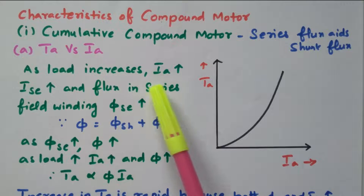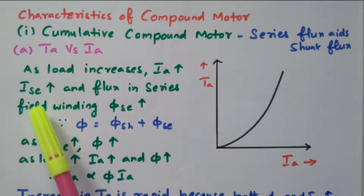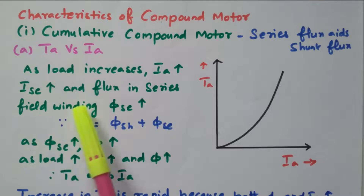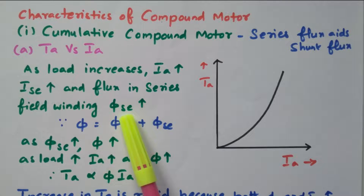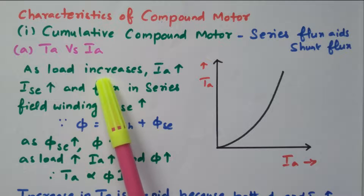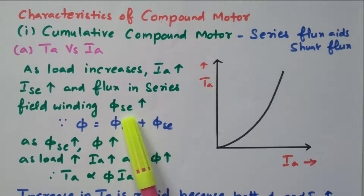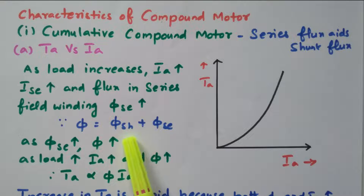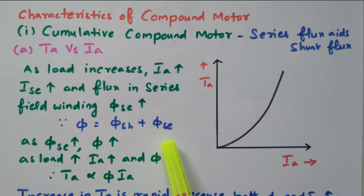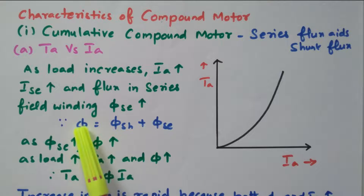As the load increases, the armature current will increase, so the series field current also increases because all are connected in series, and the flux in the series field winding also increases. The total flux φ equals the sum of flux due to shunt (φ_sh) and flux due to series (φ_se). If φ_se increases, the total flux also increases.